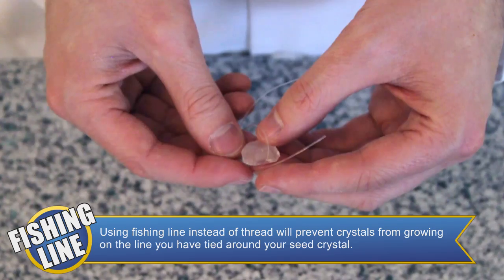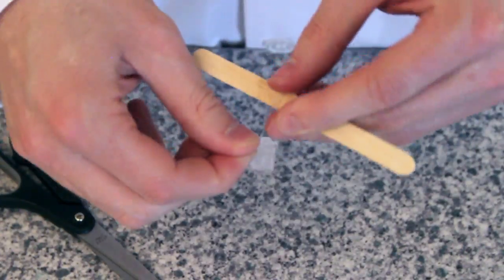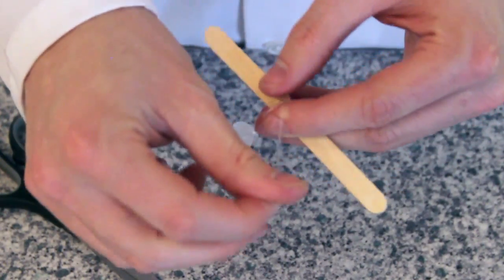Take your seed crystal and tightly tie the fishing line around it. Be careful not to break your seed crystal. Tie the other end of your fishing line around the popsicle stick.